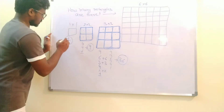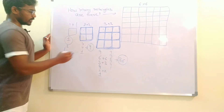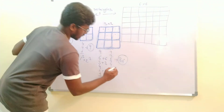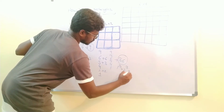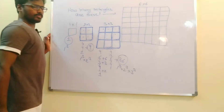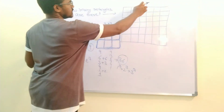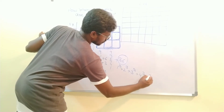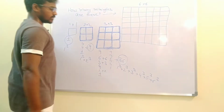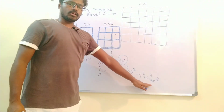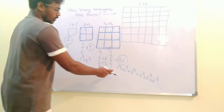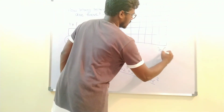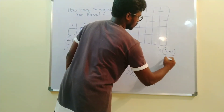We can write 1 as 1 cubed, 9 as 1³ + 2³, and 36 as 1³ + 2³ + 3³. So for a 6×6 grid, we add 4³ + 5³ + 6³ to that sum. Since computing individual cubes is tedious, we use the direct formula for this series: [n(n+1)/2]². This formula gives the sum 1³ + 2³ + ... + n³ directly.